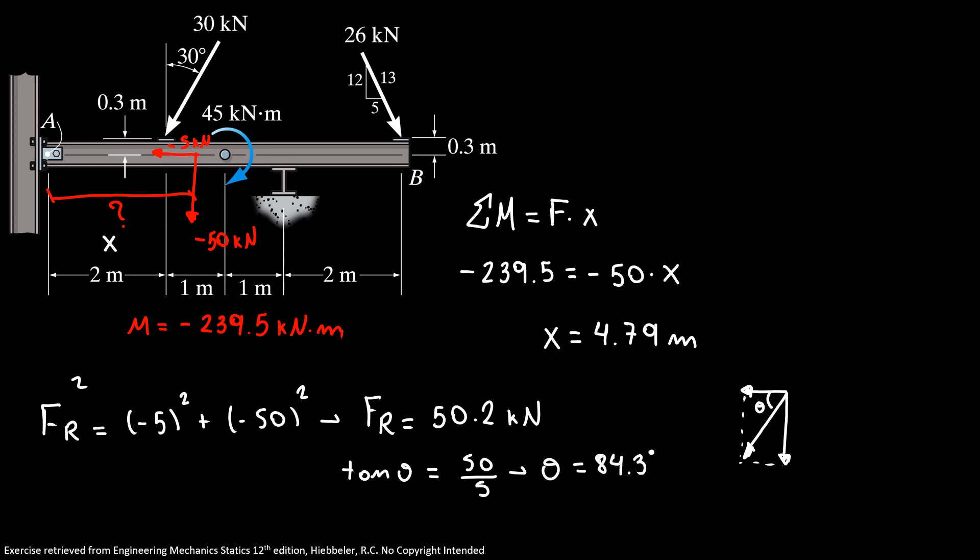So now we found everything that's required. We find our resultant force with the angle, or minus 5 and minus 50, and we found the distance that our force generated a moment about point A of minus 239.5.